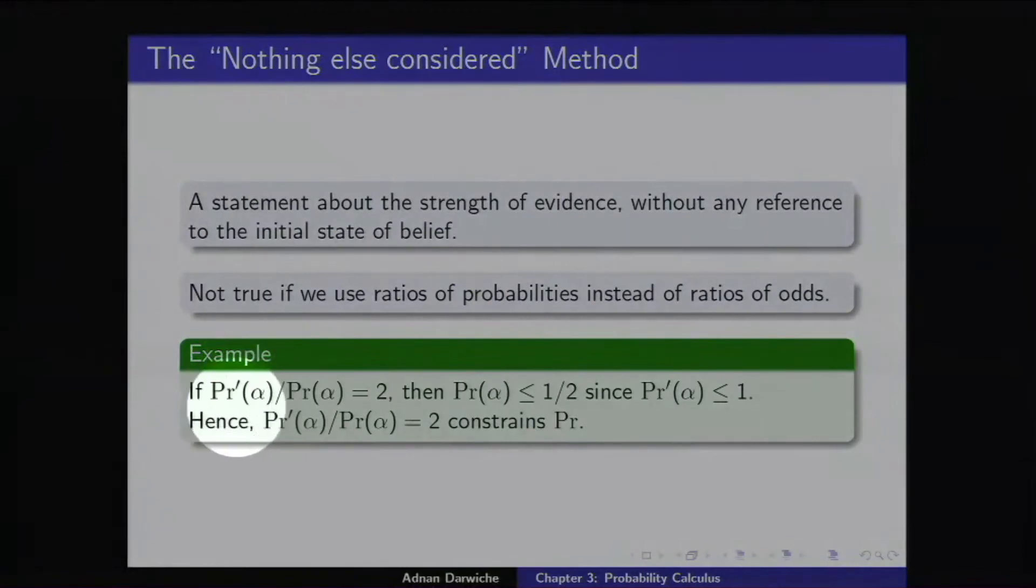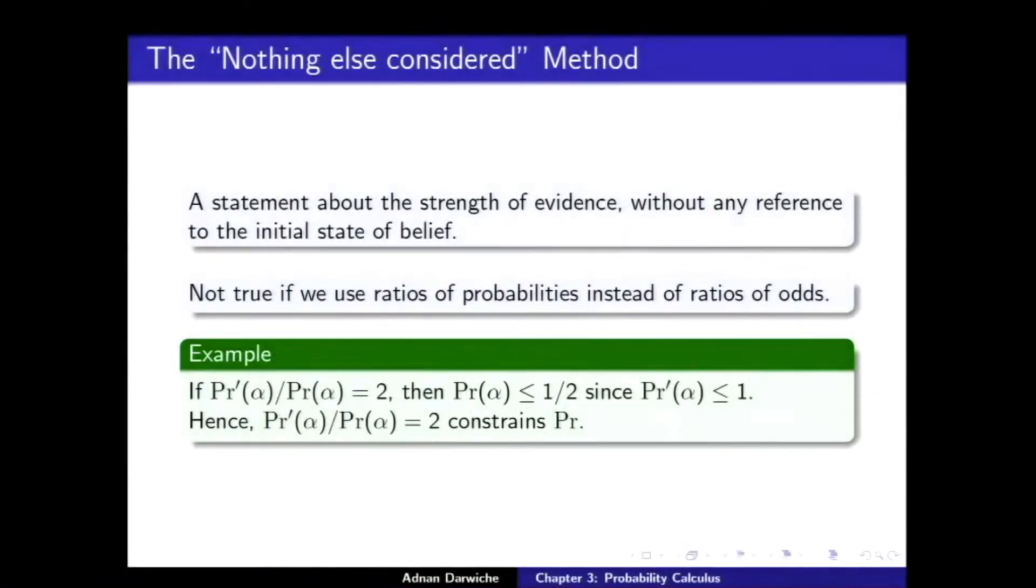A Bayes factor of one indicates neutral evidence. A Bayes factor of two doubles the odds. As the Bayes factor tends to infinity, the soft evidence tends to hard evidence, confirming. As the factor tends to zero, the soft evidence tends towards hard evidence refuting. If you tell me the probability of alpha doubled, not the odds, if you tell me if you believe in alpha divided by the old probability of alpha is two, you actually, in this case, told me something about your initial beliefs. This cannot be the case. If this is the case, then the probability of alpha must have been less than half. This is a discussion from philosophy about how can you tell me a statement about the strength of evidence from which I cannot infer anything about your beliefs before you receive the evidence. This kind of statement doesn't do it. Odds does. Relative ratio of odds does.